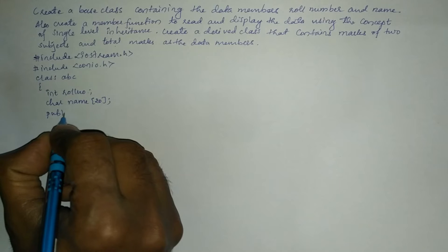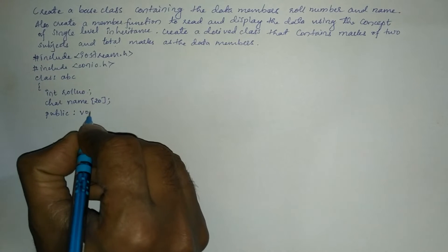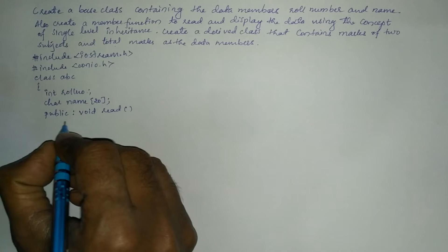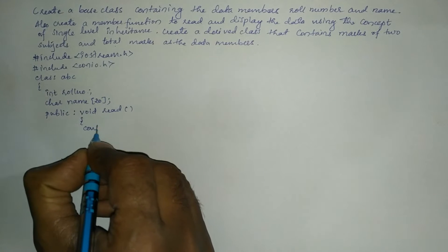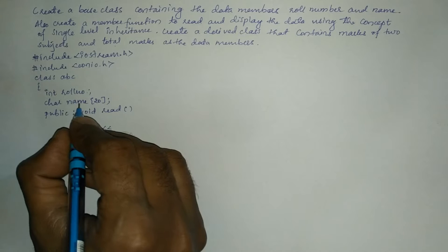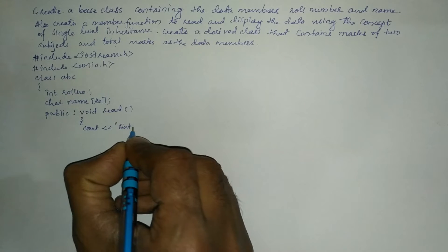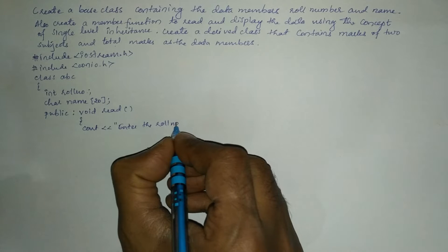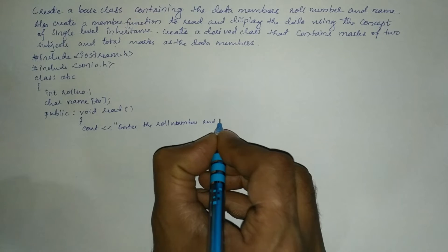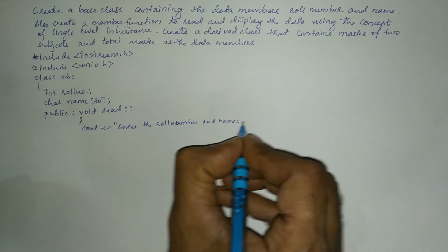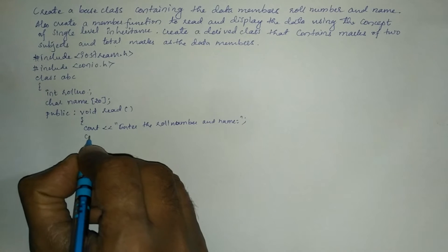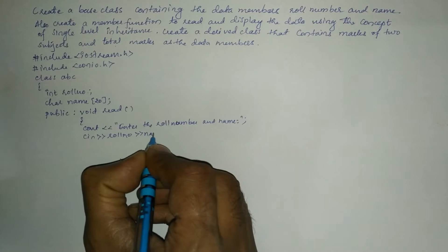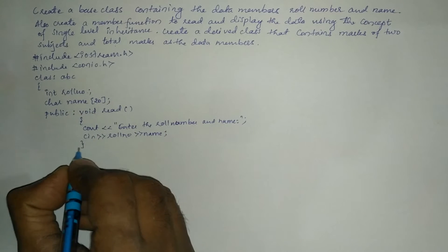Next I am going to write the public section colon. We will use the user defined function void read with a curly open brace. We will use cout to ask the user to enter role number and name, then cin to accept the role number and name of the student.